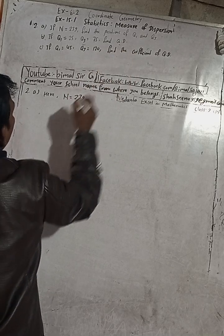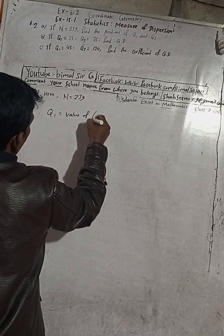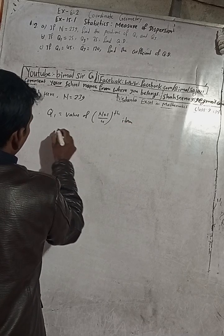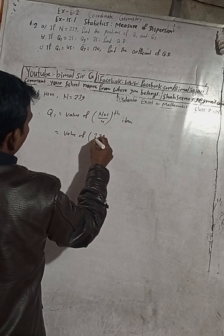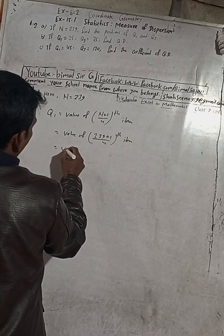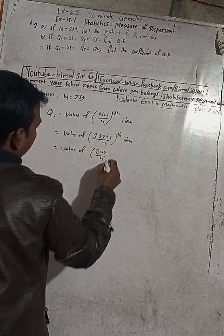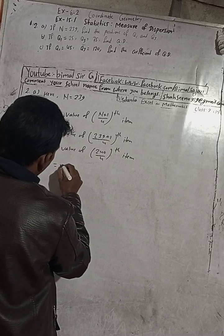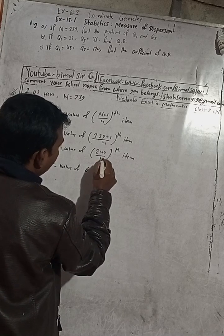So first let's solve number (a). Here n is given as 239. Find the position of Q1. Therefore, Q1 is equal to value of (n+1)/4 fourth item. This is equal to (239+1)/4 fourth item, which equals (240)/4 fourth item, equals 60th item.